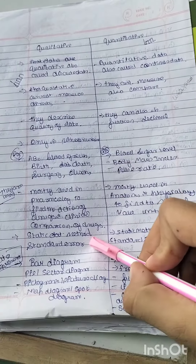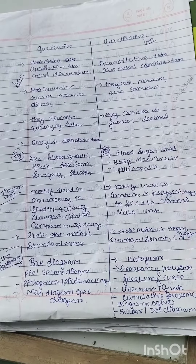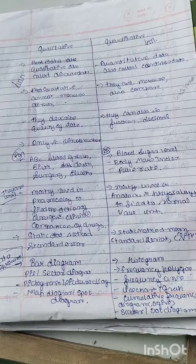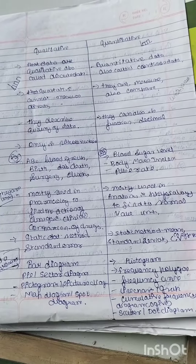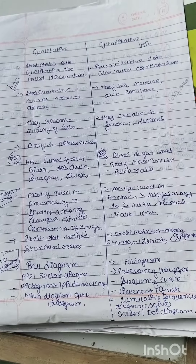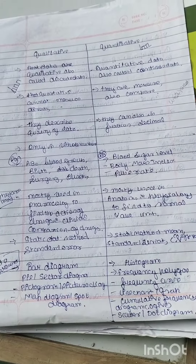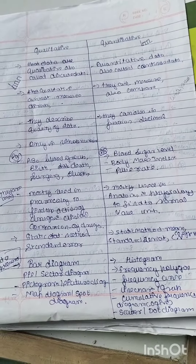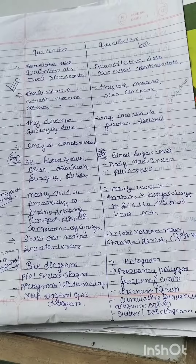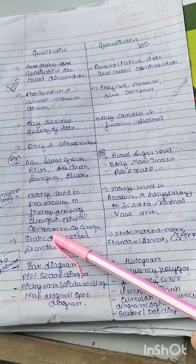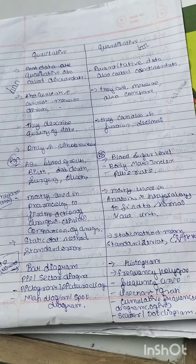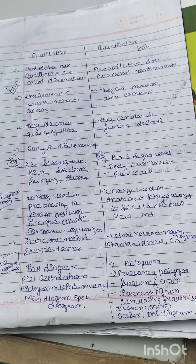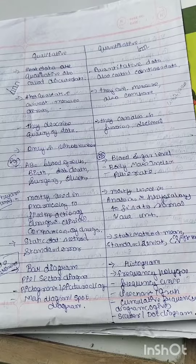The statistical methods used include standard error, standard deviation, coefficient of variation, and coefficient of deviation. These are the main statistical methods we need to find for quantitative data.